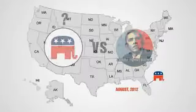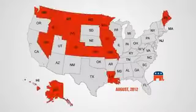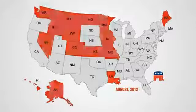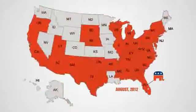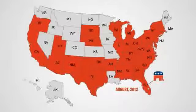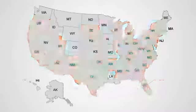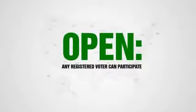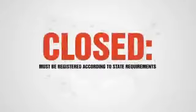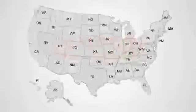Each state has its own process for electing these delegates, either through a caucus system, as in these states, or a primary system, as in these states. Caucuses and primaries are either open, meaning that you do not have to be registered Republican to vote for Ron Paul to be the Republican nominee for president, or closed, meaning that you do have to be registered Republican.